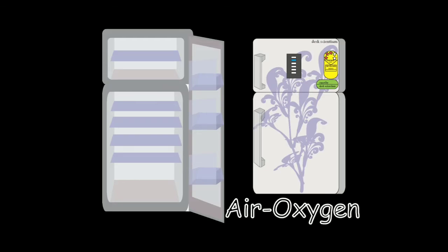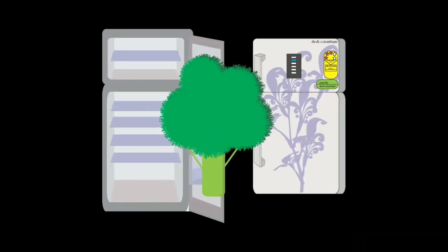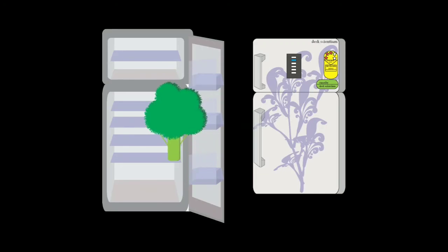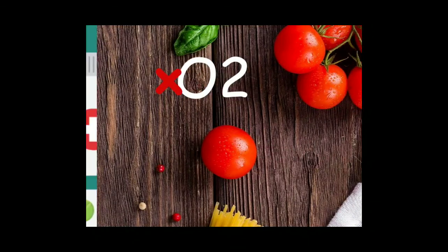Refrigeration stops the growth of microbes. For example, in our broccoli example, if we leave food in the open, it gets stale fast. Whereas if we had refrigerated it, it would have been consumable for a longer period of time. If we completely stop oxygen from reaching the food, voila! You have almost a very long shelf life.